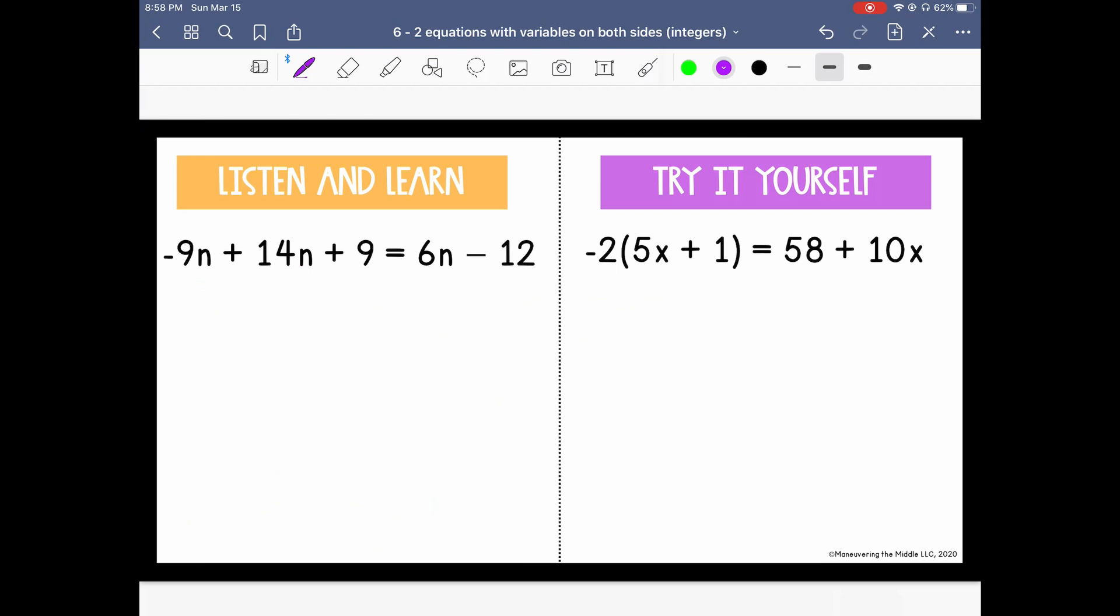Let's do a couple more. Here on the left, you'll notice that this equation involves an extra step because we have some like terms. We have negative 9n and positive 14n that are on the same side. So you want to combine those first. If I put them together, we have 5n.